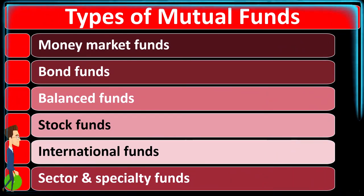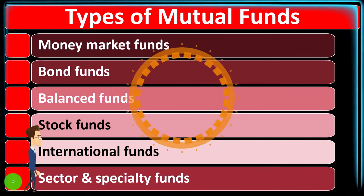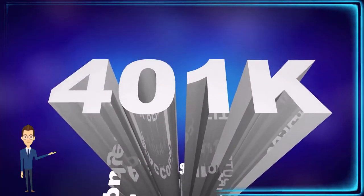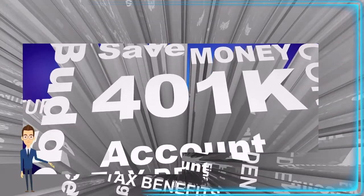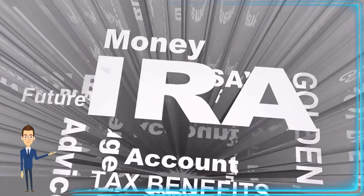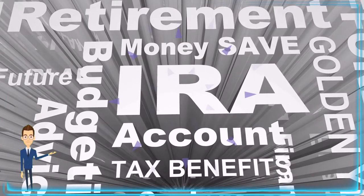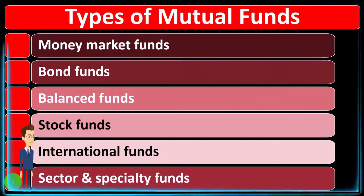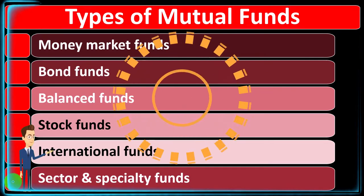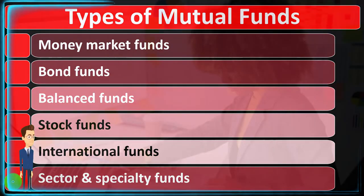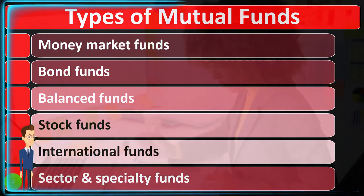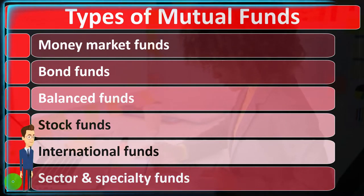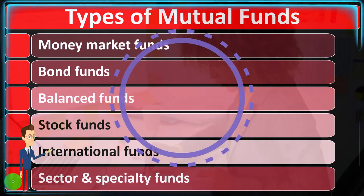Now we're going to go into sector and specialty funds. Also keep in mind that if you're talking about a 401k plan, an IRA, or any kind of retirement plan, you're still typically thinking about a mutual fund, just now under the umbrella of a retirement plan. Those things aren't totally different — they're using something similar, a mutual fund, that now has tax implications related to it that you need to consider.